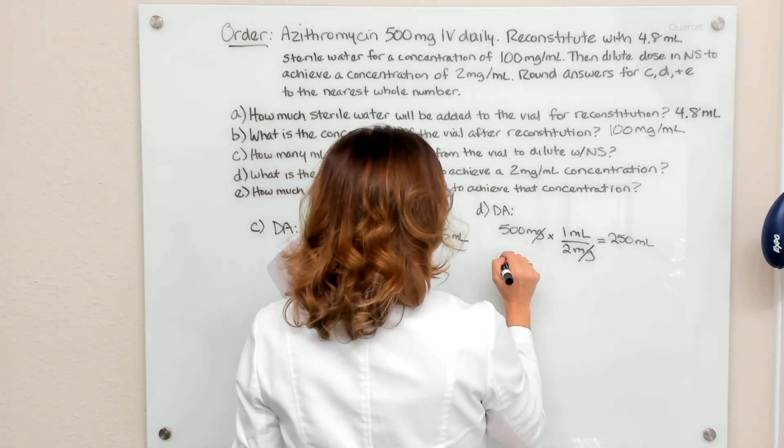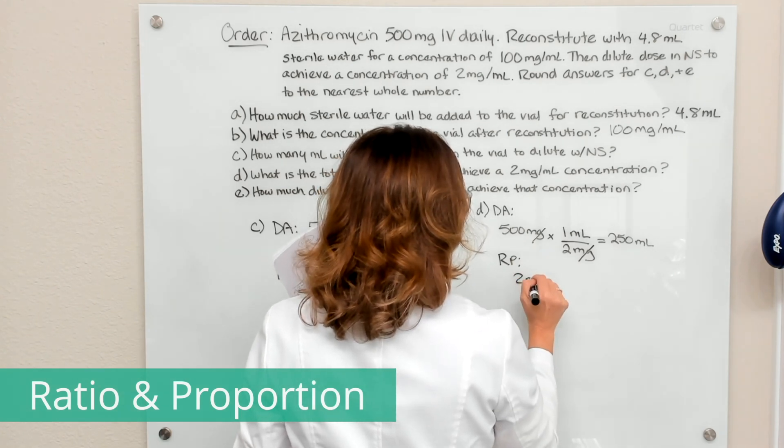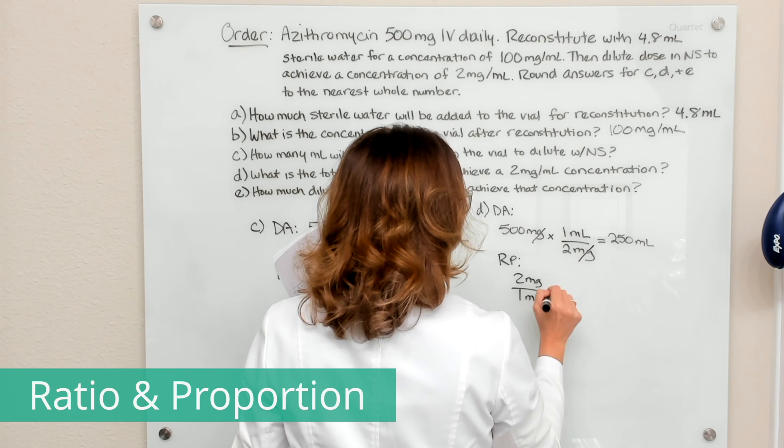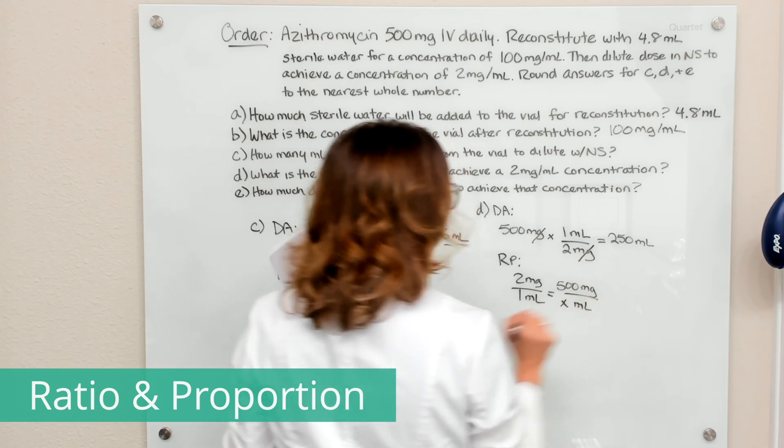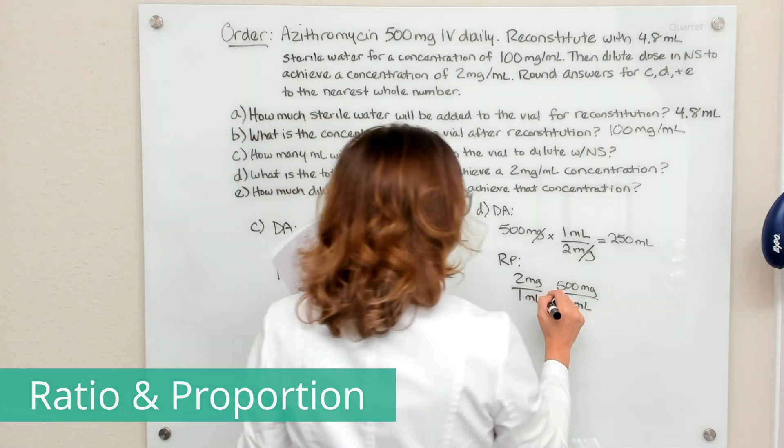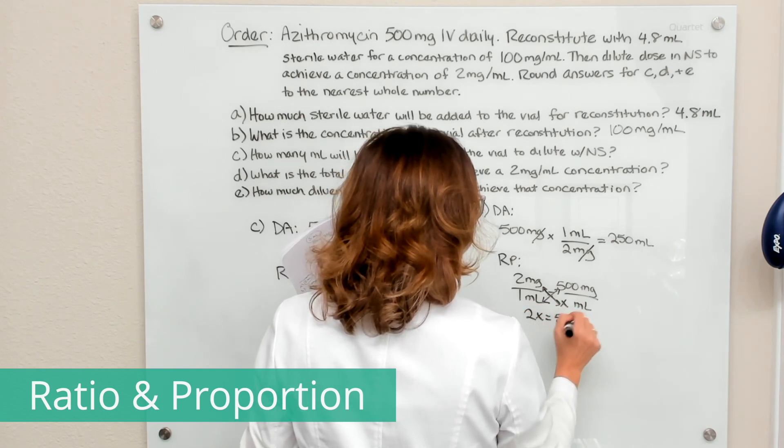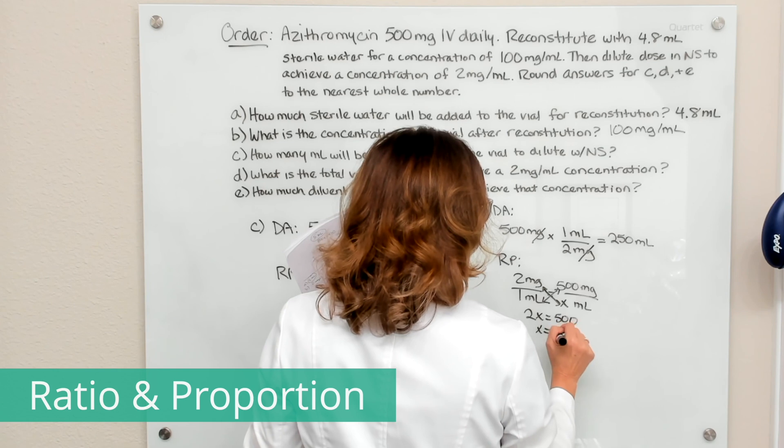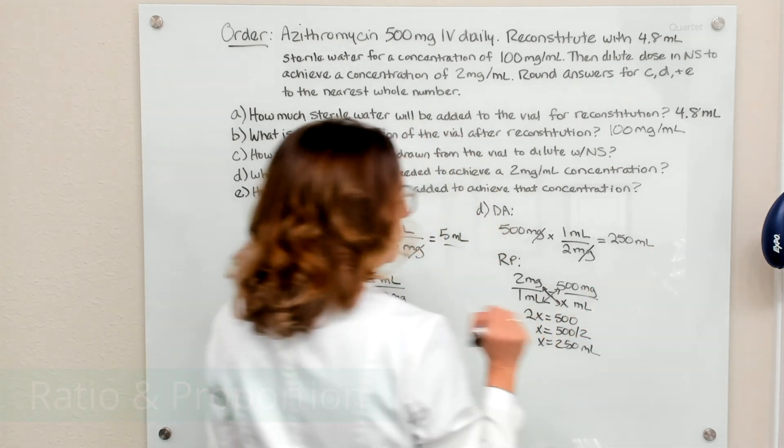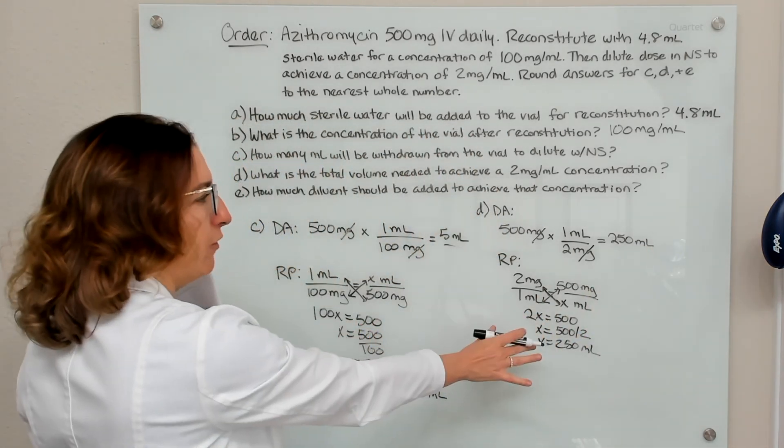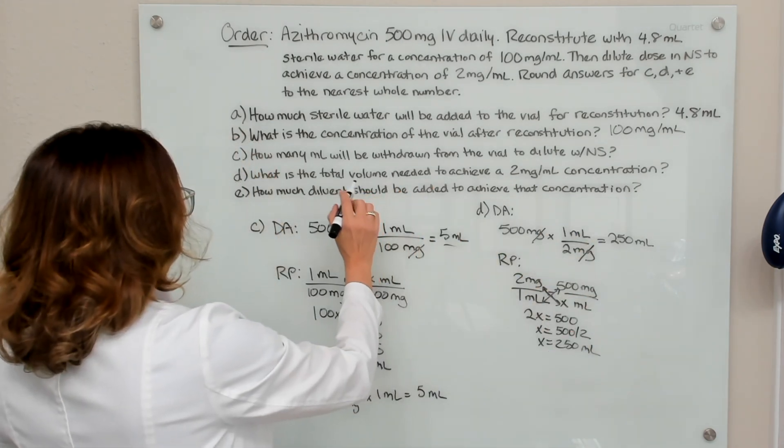I can also do this part of the problem with ratio and proportion. So if I take my desired concentration on one side of the equation and put my ordered dose on the other with an X for the unknown milliliters, then I can cross multiply. So 2X equals 500. X equals 500 divided by 2. X will equal 250 ml. So same answers we have here. It's a different way to work it out. So that's already rounded to the nearest whole number. So we're good to go for part D.